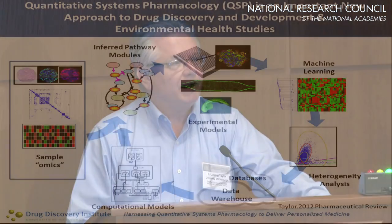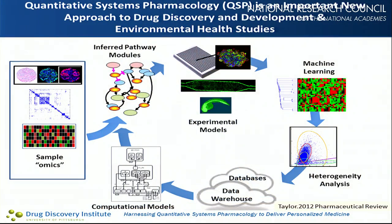Quantitative systems pharmacology, which has been described for a few years now, is really the integration of classic pharmacology and the newer field of systems biology to create QSP. It starts conceptually with clinical samples — in this case, it could be experimental systems — where you analyze a whole series of omics, infer pathways, and then design experimental models to explore activity. Today, we're most interested in the microphysiology systems.